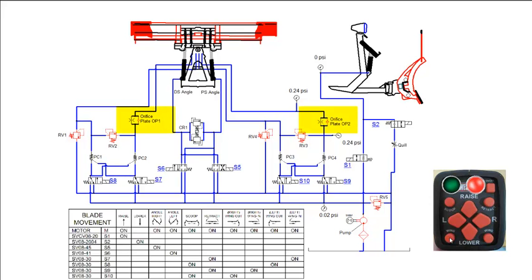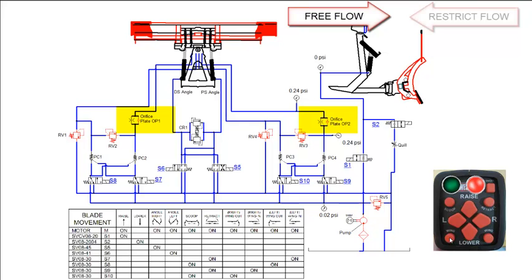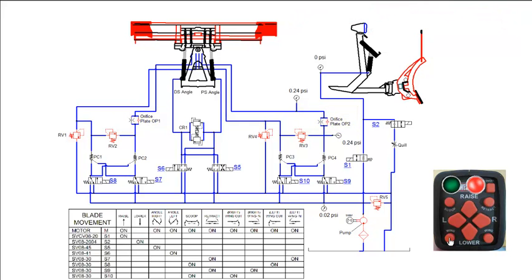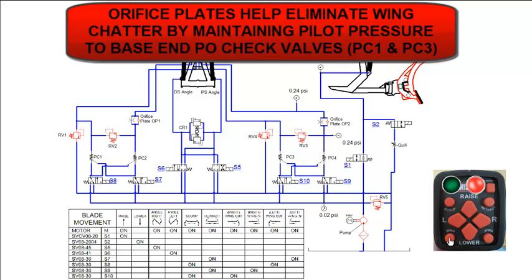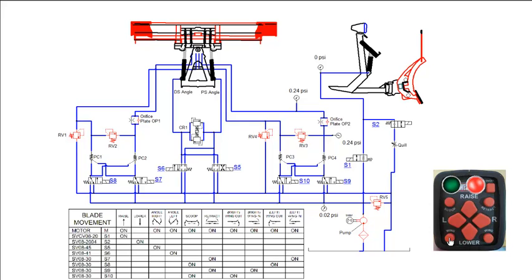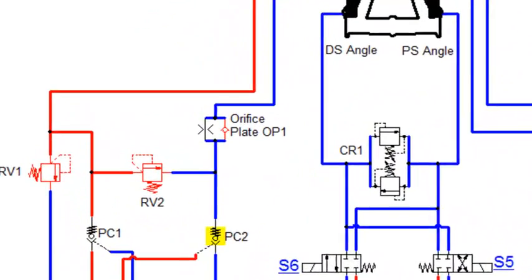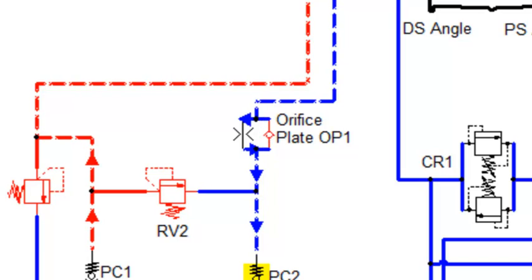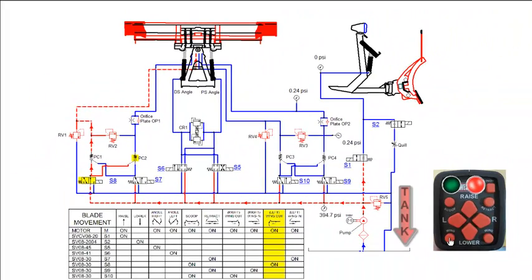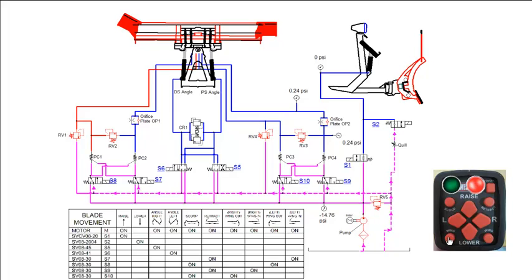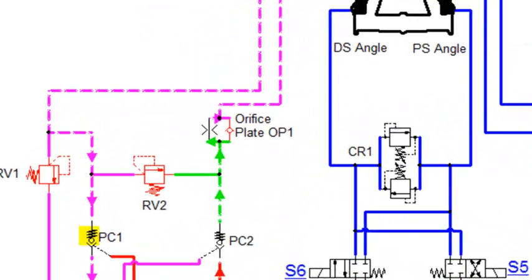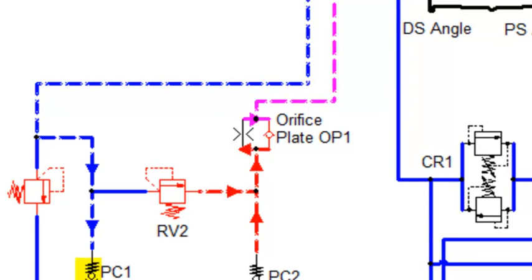The orifice plates are a component that allow free flow in one direction and restricted flow in the other. These are currently used in the wide out adjustable wing snow plow only. The orifice plates help eliminate chatter during wing retract functions that occur due to displacement differences of the double acting wing cylinders. In this example, you can see that during the left wing extend function, the returning fluid, highlighted in blue, pushes the orifice plate and flows freely around it, rather than through it, on its path back to tank. This reinforces the fact that fluid will always take the path of least resistance. When the left wing is retracted, high pressure fluid is forced through the restriction in the orifice plate, limiting the flow and eliminating wing chatter.